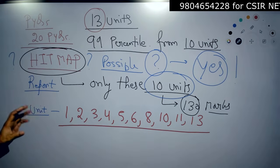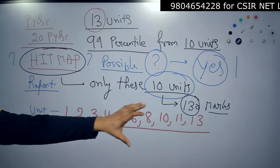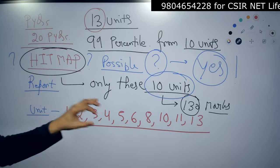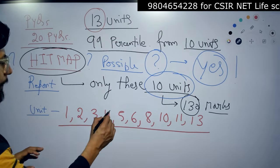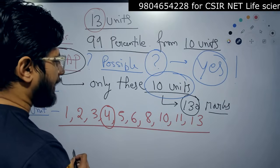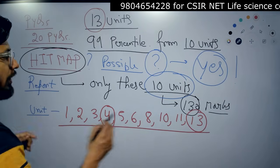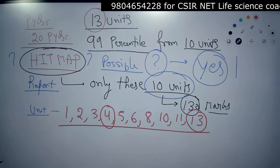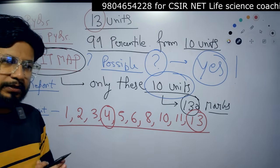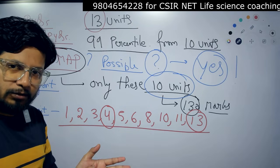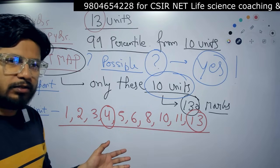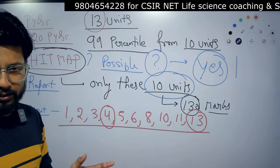These are the 10 units which we found are the most important. Among them, apart from unit 4 and unit 13, the rest are economical.